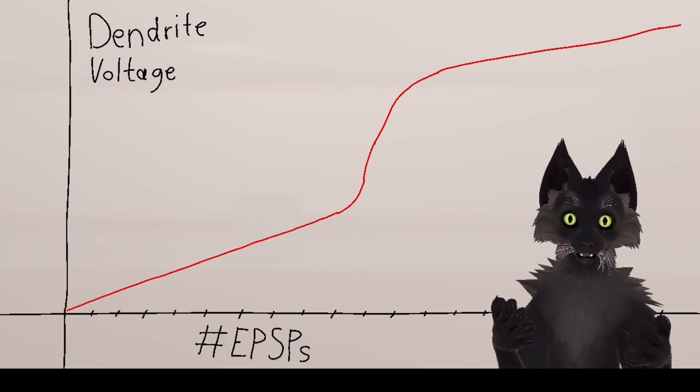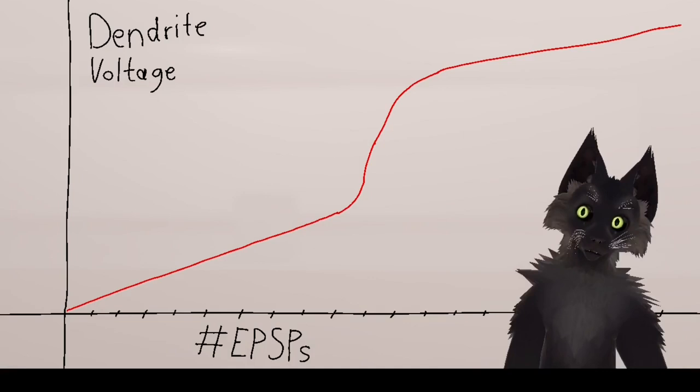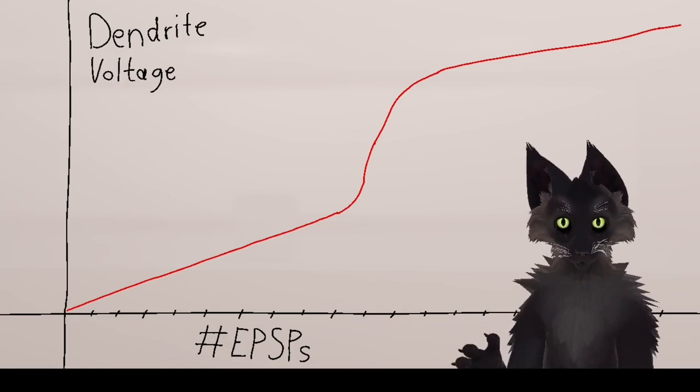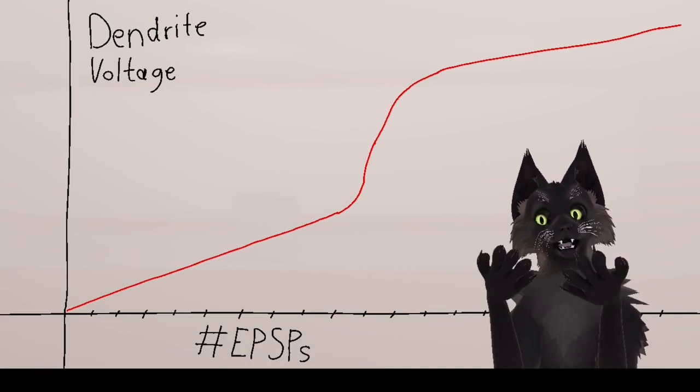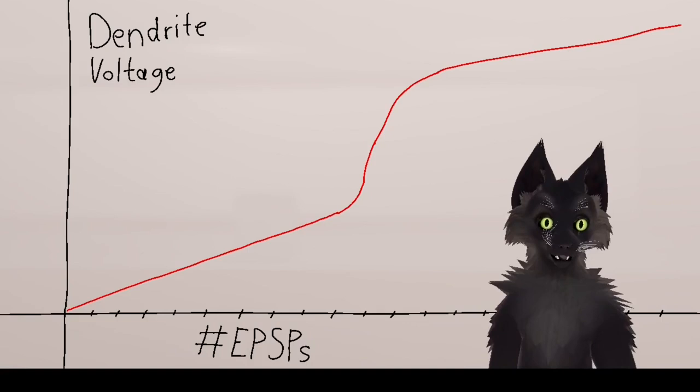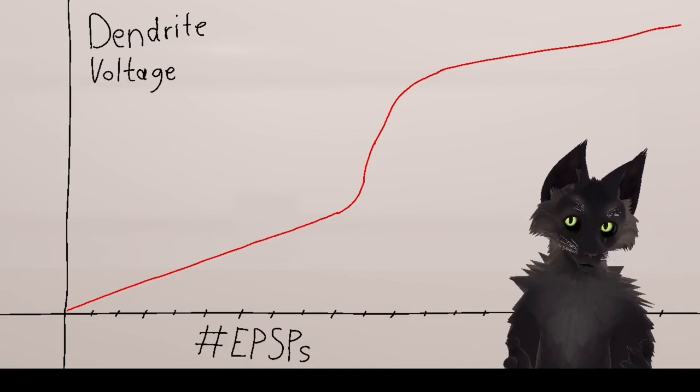Neuroscientists have found that dendrites have some interesting properties. Dendrites are normally not very conductive, meaning that when an EPSP happens on a dendrite, they don't really do anything. The electricity goes nowhere, and it quickly leaks away. However, dendrites are full of a special type of ion channel that is voltage activated, and when this special ion channel activates, it makes the dendrite much more conductive, which allows the EPSPs to affect the soma and possibly even cause the neuron to emit an action potential.